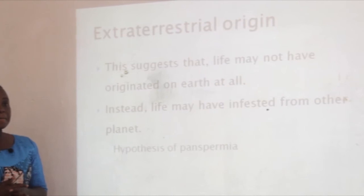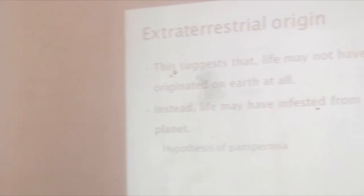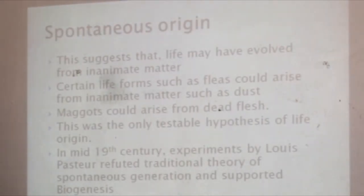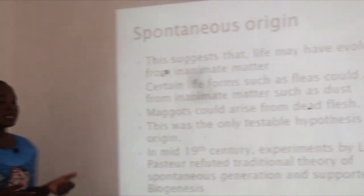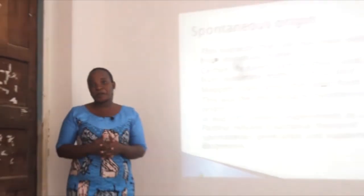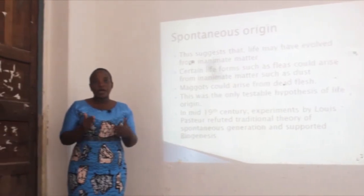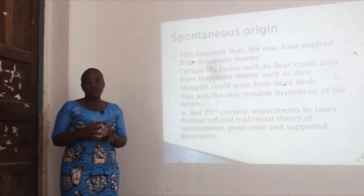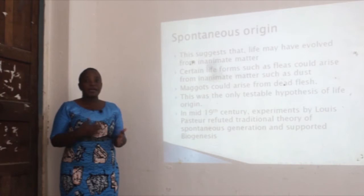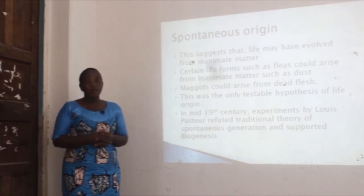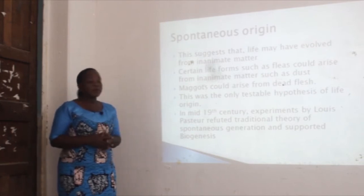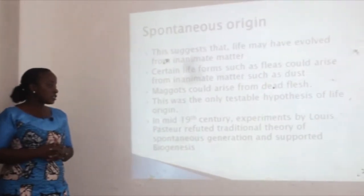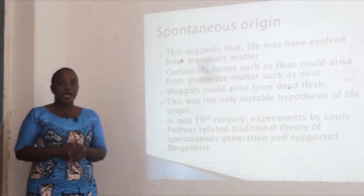Another theory is the spontaneous origin, which suggests that life may have evolved from inanimate matter. For example, certain life forms could arise from inanimate matter such as dust, and maggots could arise from dead flesh. This theory was formed as a result of different experiments carried out by different scientists. However, it received many challenges in the 17th and 18th centuries. Until the mid-18th century, the experiments of Louis Pasteur refuted the traditional theory of spontaneous generation.